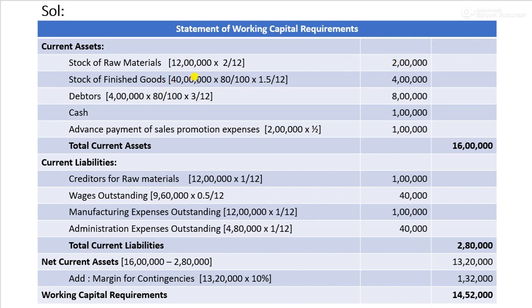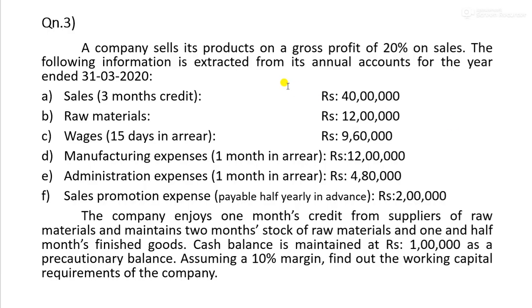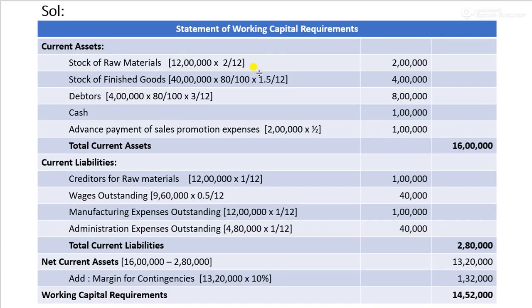Finished goods are computed at cost: sales are 40,000, gross profit is 20%, so cost is 80%. Finished goods for one and a half months: 4 lakhs. Debtors are computed at cost: 80% for a 3-month credit period, giving debtors of 4 lakhs. Cash balance is 1 lakh. Prepaid sales promotion expense is 1 lakh.